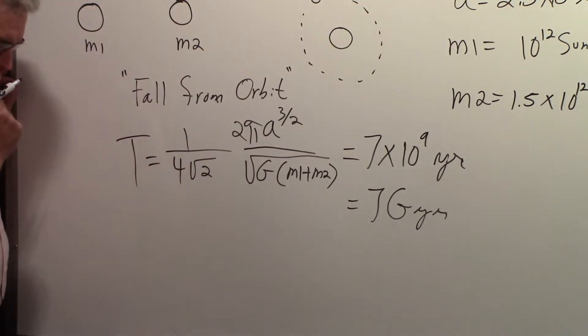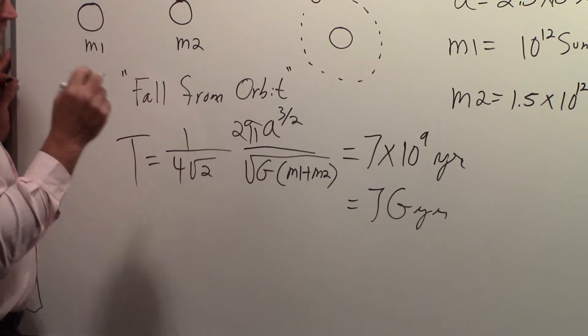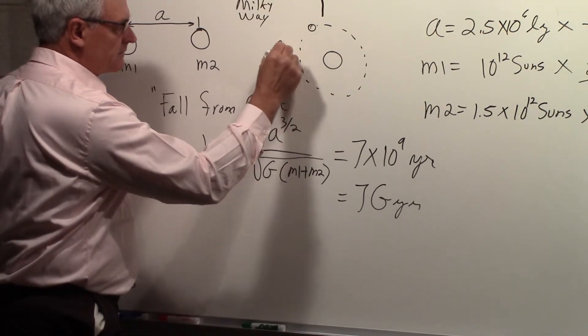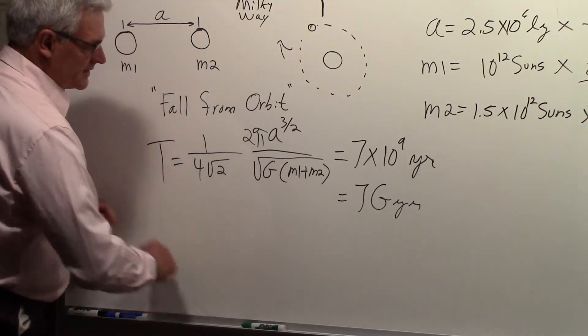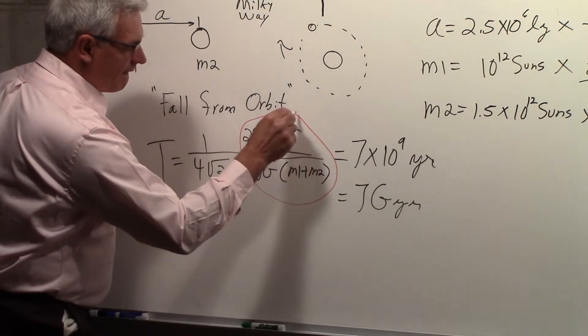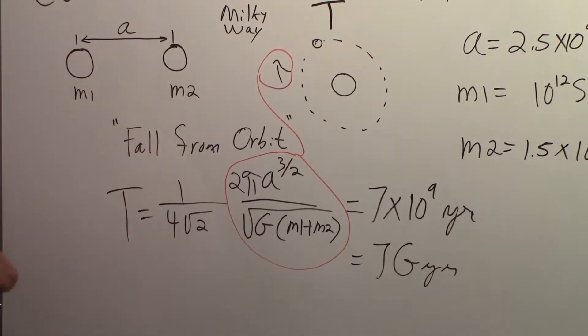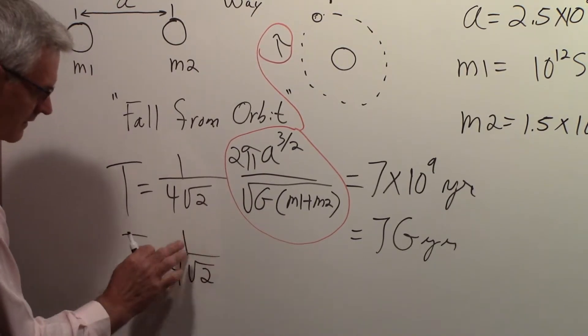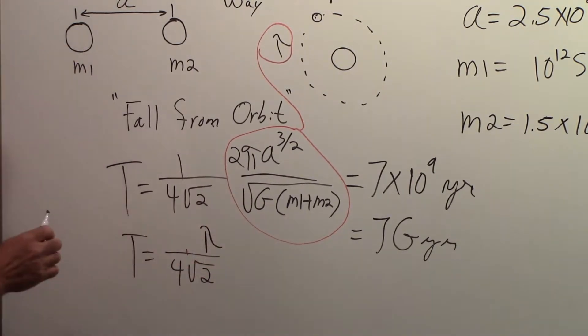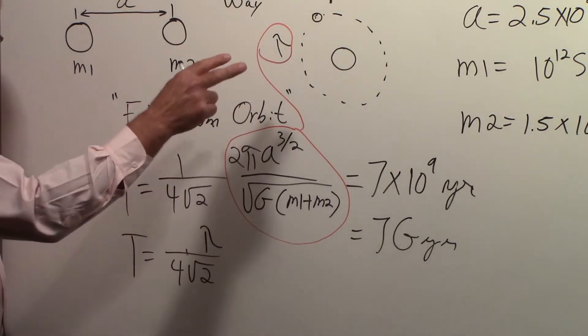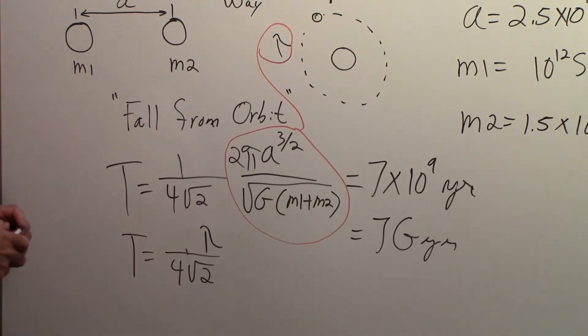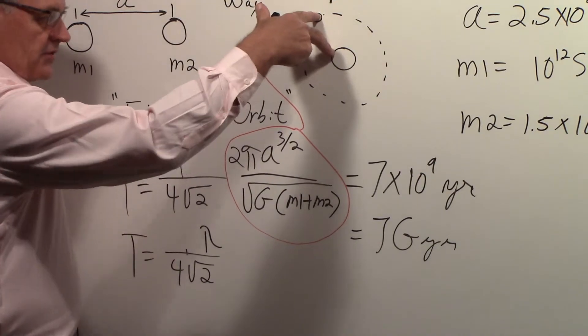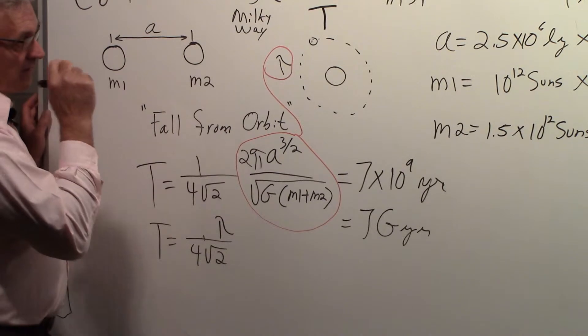Before I do that, I just want to back up again to the case of the earth going around the sun or somebody going around some other body. Let's say that the orbital period is tau. That tau is equal to this quantity here. So this equation for this case, the time for the two bodies to collide is simply the period of their orbital motion divided by four times the square root of two. But again, that's for the case where they have an initial velocity towards one another of zero, and that's not the case for the Milky Way and M31.